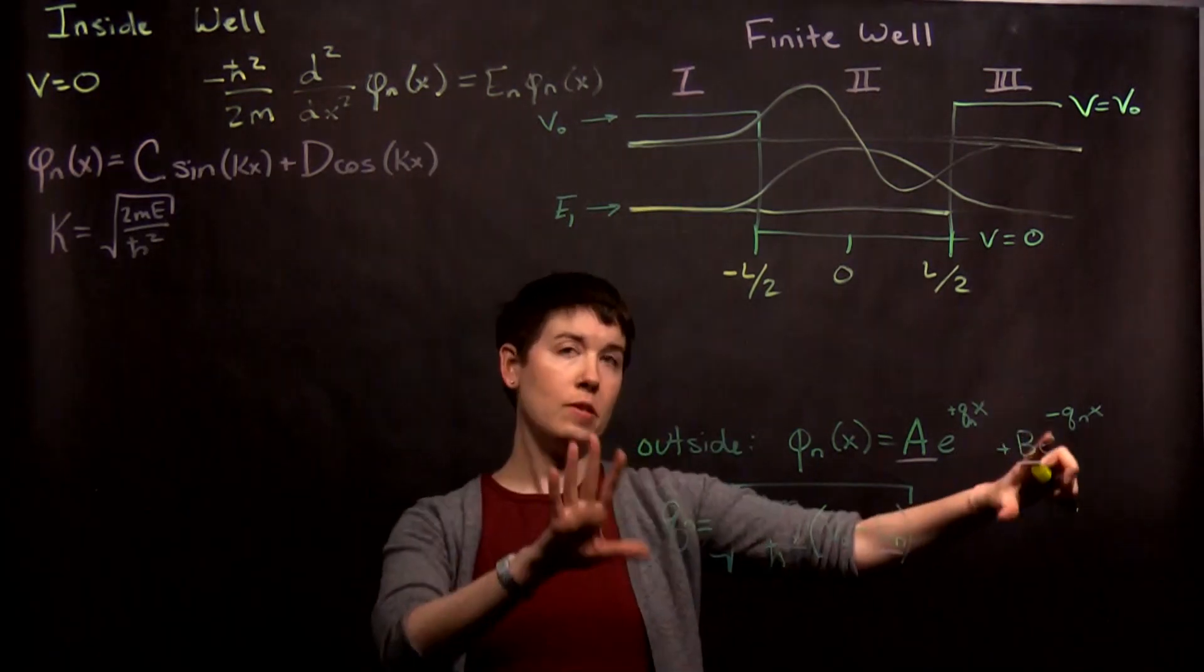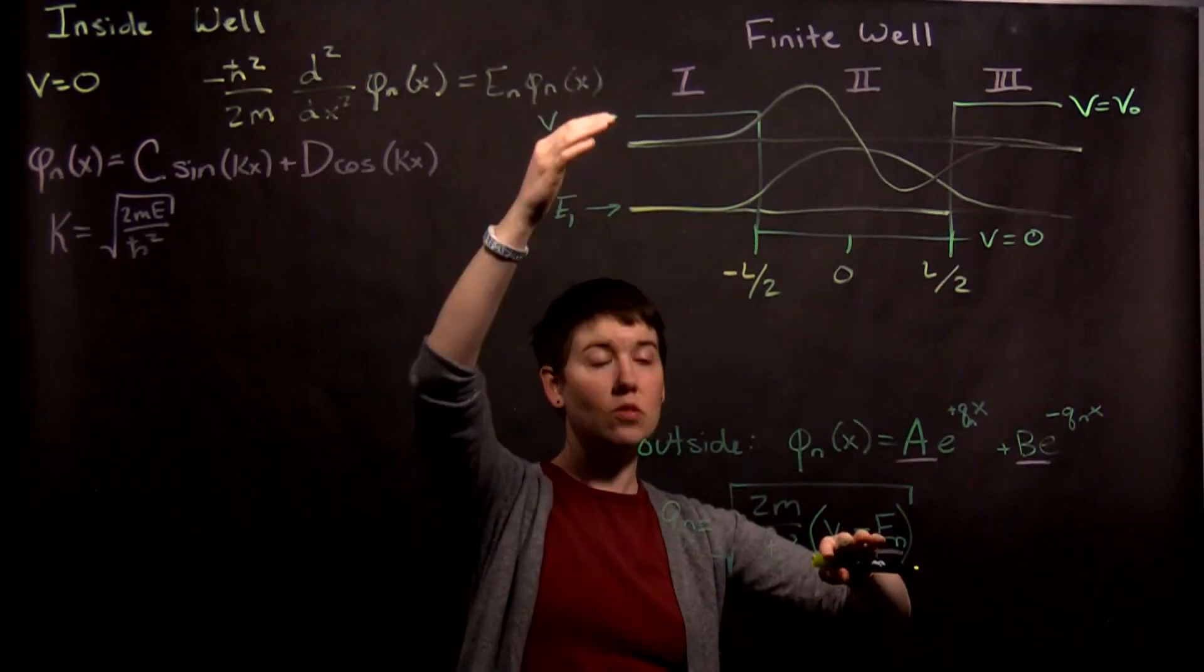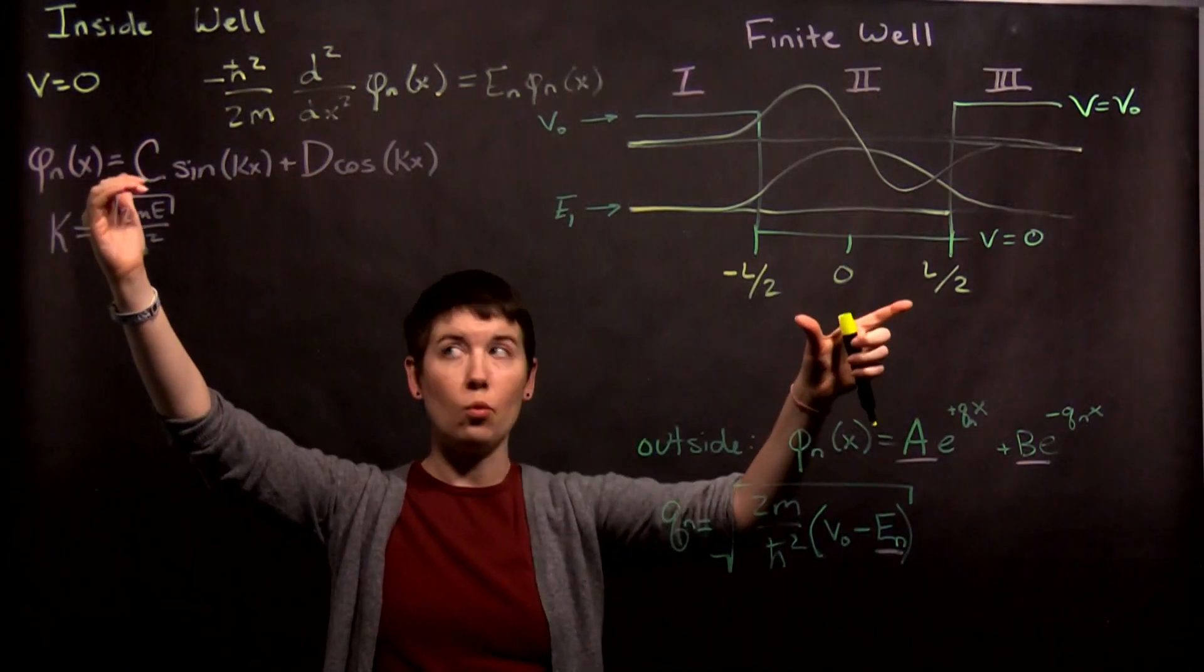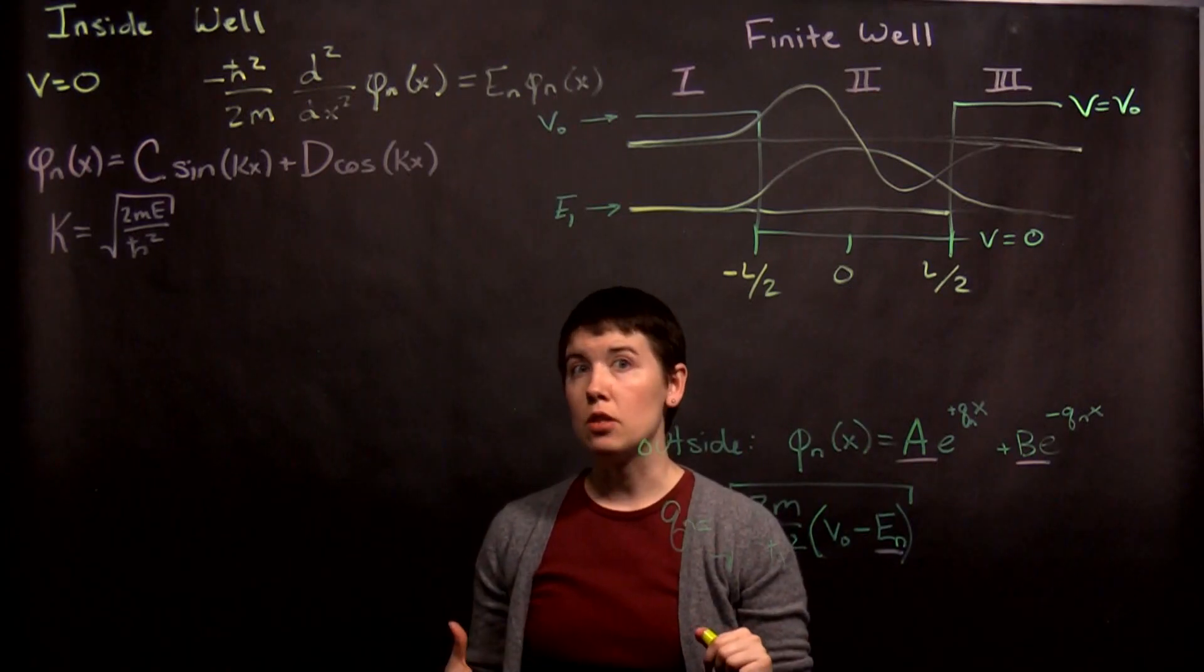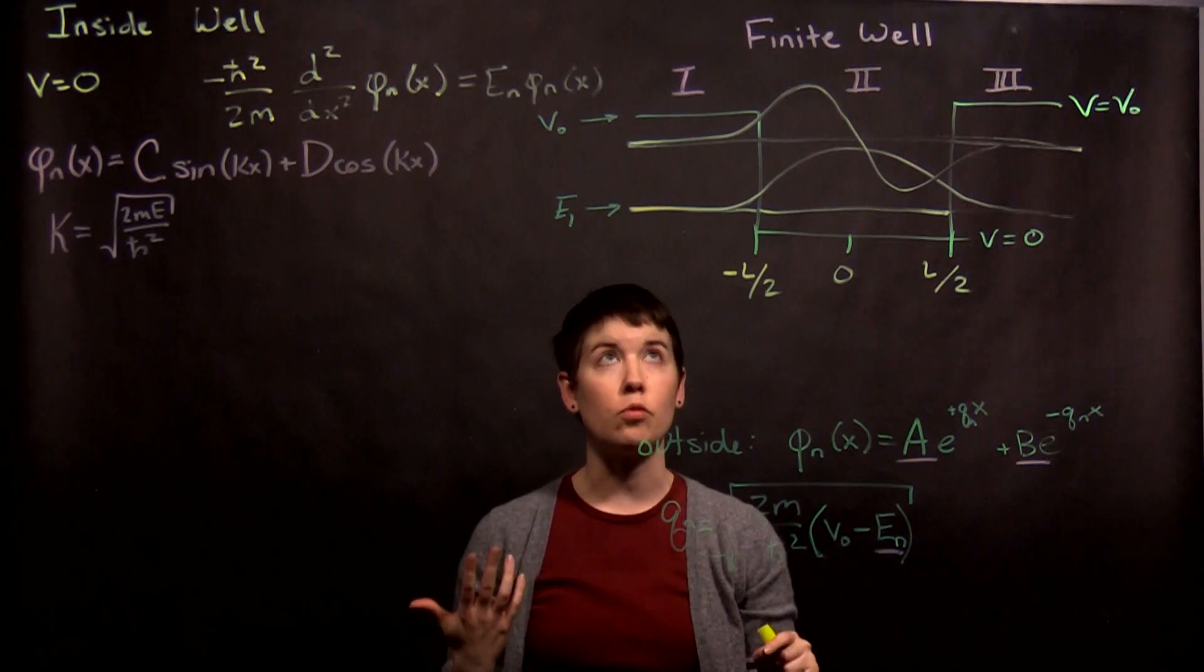So for the finite well, we have this type of solution outside the well, where my potential is equal to v-naught, and we have then this solution inside the well where the potential is zero. Next we have to use our boundary conditions, and the boundary conditions now are a little more complicated than they were for the infinite well.